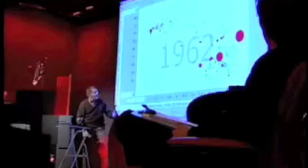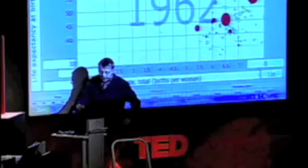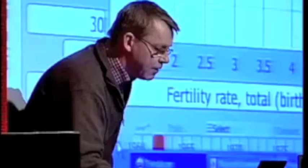And 1962, there was really a group of countries here that was industrialized countries and they had small families and long lives. And these were the developing countries. They had large families and they had relatively short lives. Now,